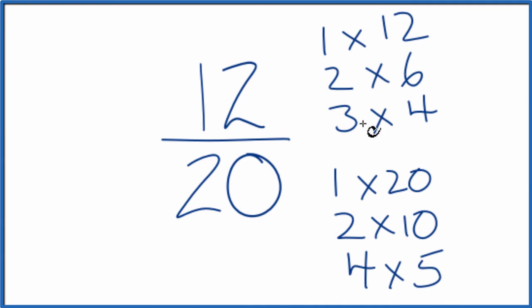So these are the multiples for 12, these are the multiples for 20, and we're looking for the greatest common multiple. It looks like 4. That's going to be the greatest common multiple for both 12 and 20. 4 will divide evenly into 12 and into 20.